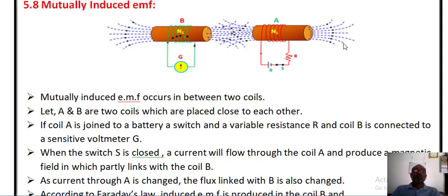Mutually induced EMF. As shown in this figure, mutually induced EMF occurs between two coils. Here there are two coils, coil A and coil B, which are placed near each other.